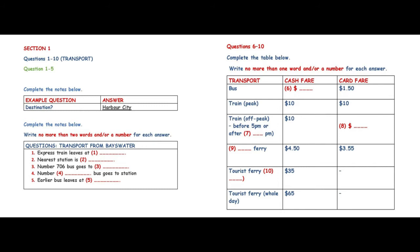Section 1. You will hear a conversation between a clerk at the enquiries desk of a transport company and a man who is asking for travel information. First, you have some time to look at questions 1 to 5. You will see that there is an example that has been done for you. On this occasion only, the conversation relating to this will be played first.